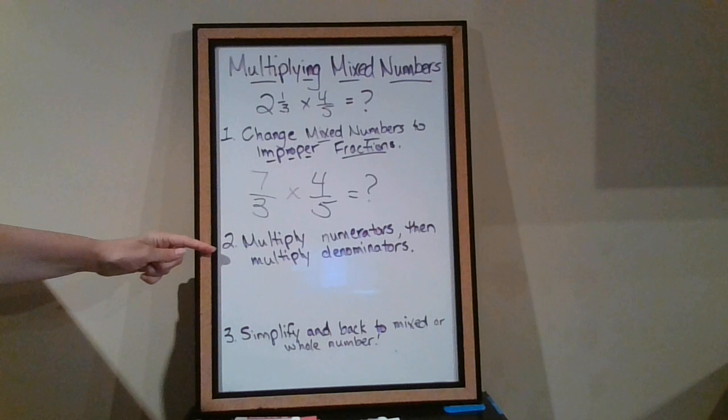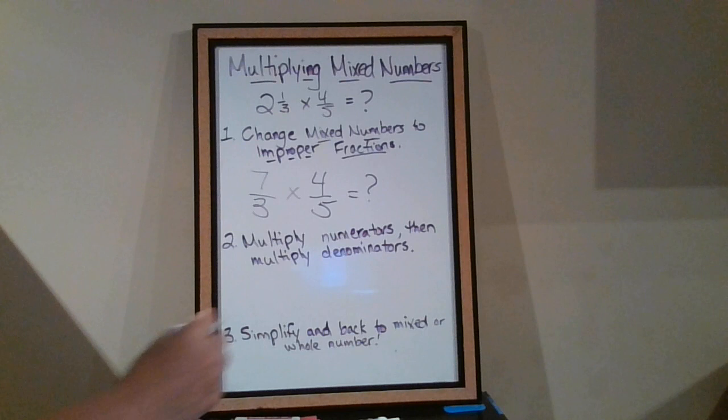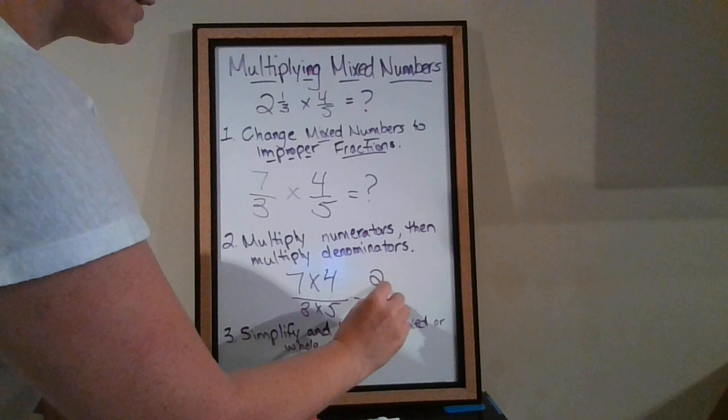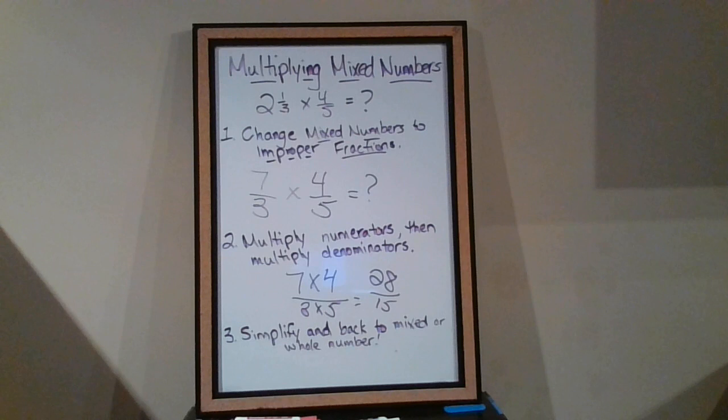And then the next step is exactly what we've been practicing, where we multiply the numerators, and then we multiply the denominators. So I'm going to say it's seven times four over three times five. Seven times four is 28, and three times five is 15.